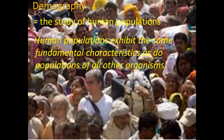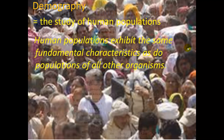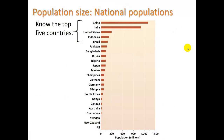Things like population size — here is a list of the top most populated countries, and you need to know the top five: China, India, US, Indonesia, and Brazil.